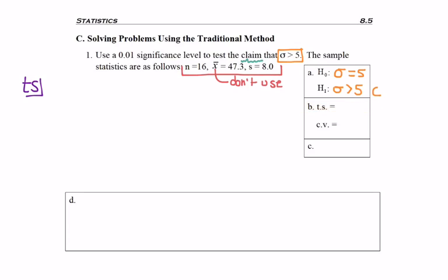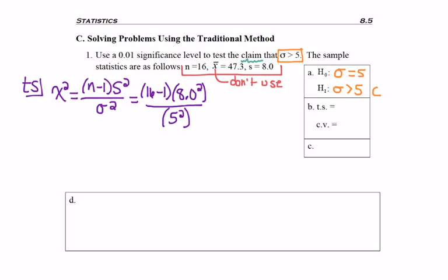Okay, first thing I want to do is find my test statistic. So chi squared equals n minus 1 times s squared divided by sigma squared, sample standard deviation squared divided by population standard deviation squared. So all I've done is just copy the formula right off of my table, and now I'm going to fill in the values 16 minus 1 times 8 squared divided by 5 squared. I happen to write the squares inside the parentheses. For clarity's sake, I always like to fill in all the parts of the formula.